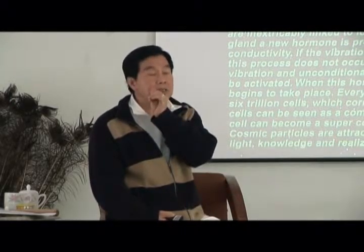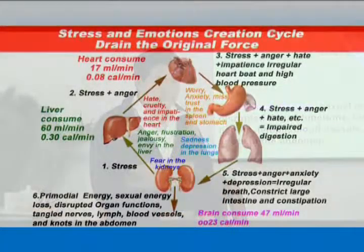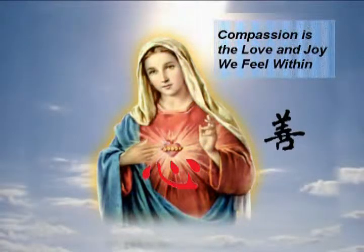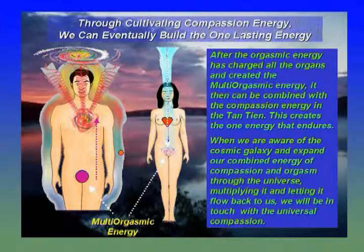This is very important — the whole practice is based on this. There is a lot of research on this on the Western front now. Love and orgasm are very important. Emotional states drain our life force, especially fear, phobia, and trauma in the kidneys. These take away a lot of life force. In the Tao, the heart energy and the sexual energy must work together.